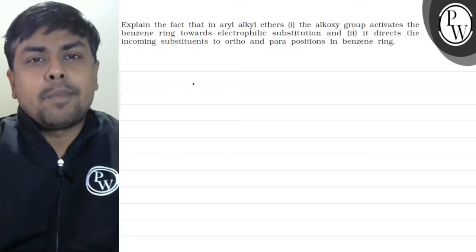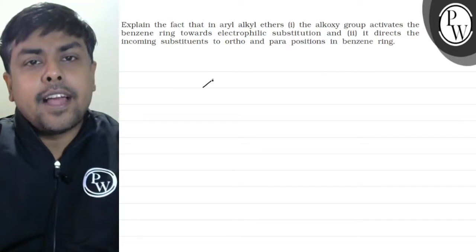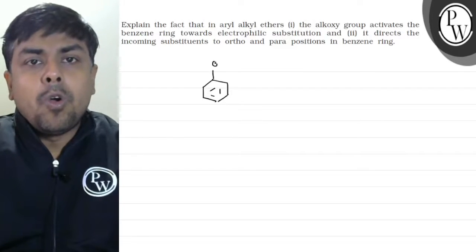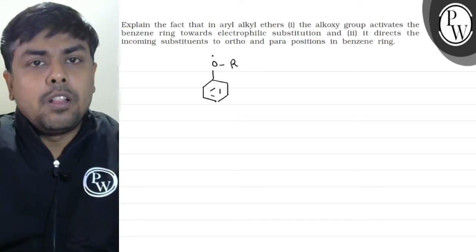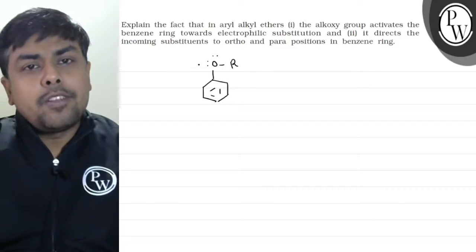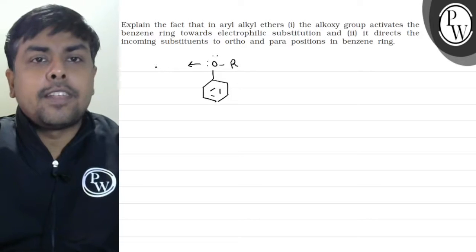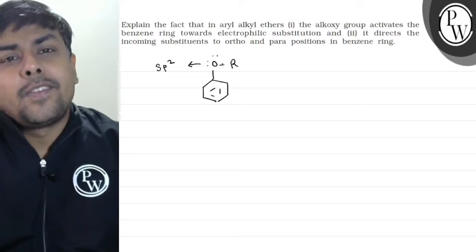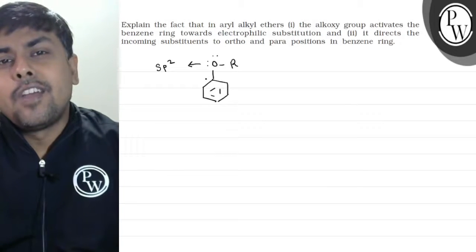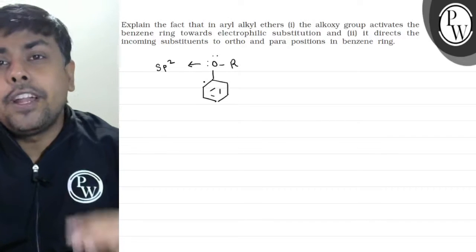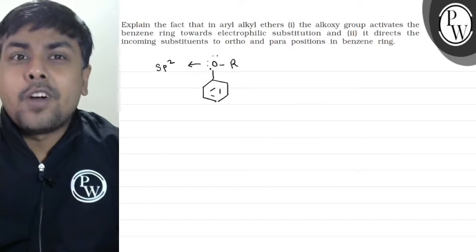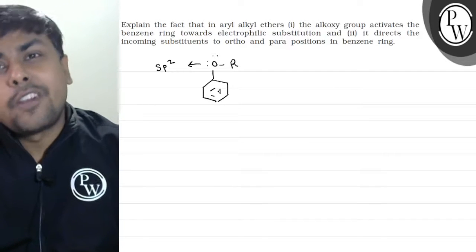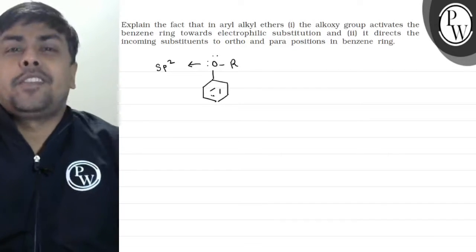Let's understand the first thing about aryl alkyl ether. What is the hybridization of this oxygen atom? Can I say it's sp2? So can I say it will undergo resonance? If it undergoes resonance, then electrons flow into the ring — electron flow into the ring means the ring becomes electron rich.